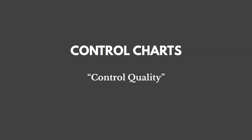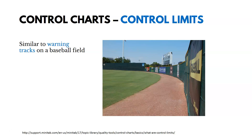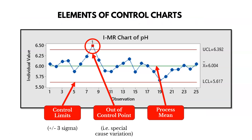Control charts are an important tool in Control Quality to make sure we're maintaining an ideal quality measurement. They display process data over time and against control limits — the UCL and LCL represent upper control limits and lower control limits. It's almost like warning tracks in a baseball field: if a player sees the warning track, they know they're getting close to the wall. Similarly, control limits on a control chart indicate an out-of-control process — if we're above or below those limits, we have a quality issue. Control limits are set at plus or minus three standard deviations.